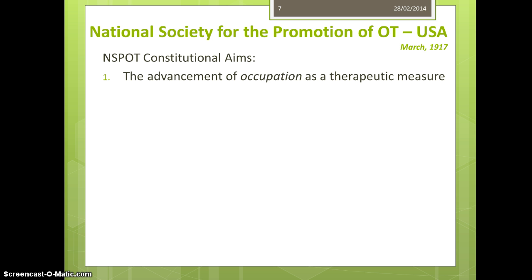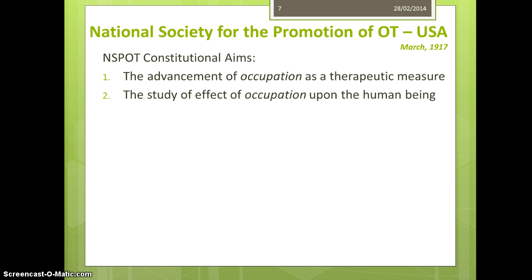It's good to look at what their constitution was — these were the founders we read about. The aims were: the advancement of occupation as a therapeutic measure, the study of the effect of occupation on a human being, and the scientific dispensation of this knowledge. This was in March of 1917; we are now March of 2014 — just shy of 100 years as a profession. How do you think we're doing on meeting these aims?